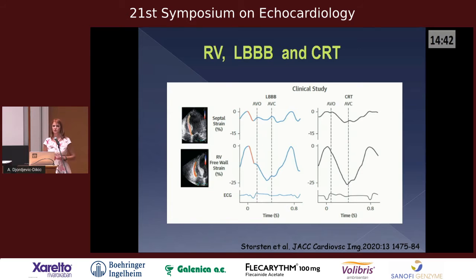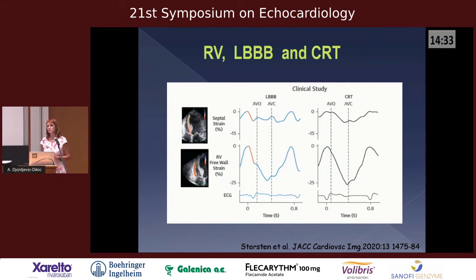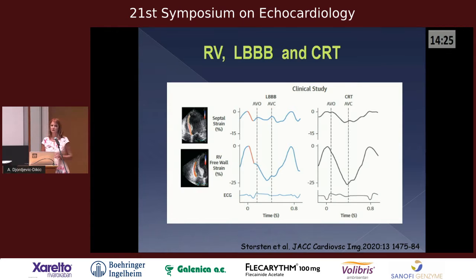What about the right ventricle, and how does left bundle branch block influence it? During normal contraction of the left ventricle, septal contraction facilitates ejection of the right ventricle — contributing up to 40 percent of the rise in right ventricular systolic pressure.